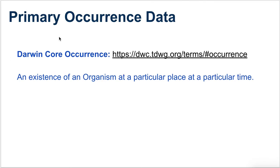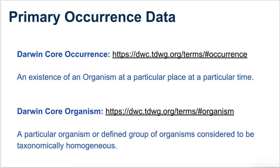Taking advantage of Darwin Core and their definition of occurrence: an occurrence is the existence of an organism — where 'organism' is capitalized because it's a Darwin Core class — at a particular place at a particular time. In Darwin Core, an organism refers to a particular individual organism or a defined group considered taxonomically homogeneous, which hopefully lets us understand we're talking about things like individuals of a species.